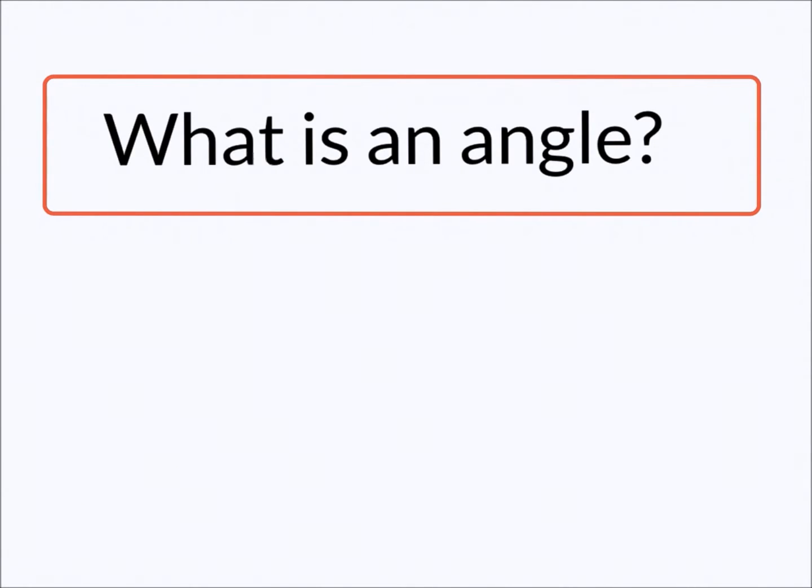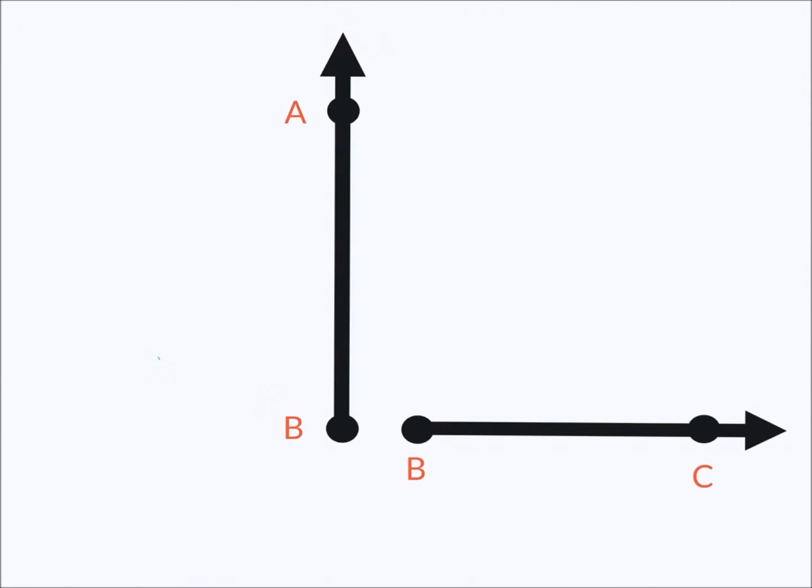In math an angle is a combination of two rays that come together at one point called the vertex. Here we have two rays. A ray has an end point and it continues in a particular direction. This one is called ray BA. Over here we see ray BC and it starts at an end point and continues in the direction of C. We would write this ray BC.